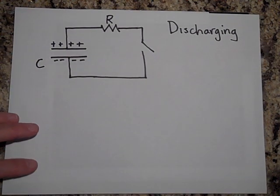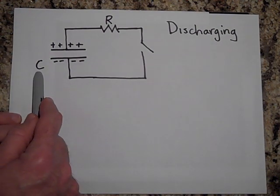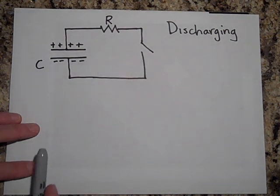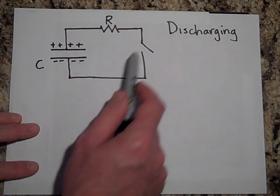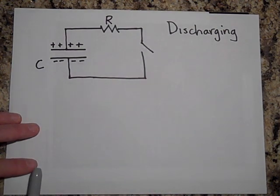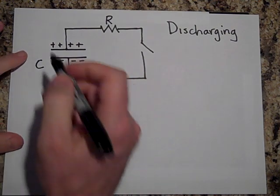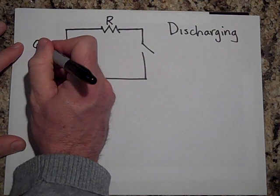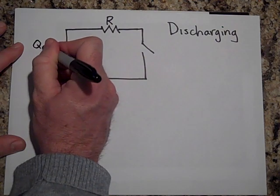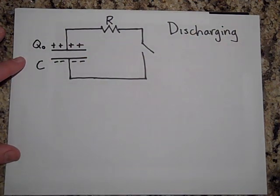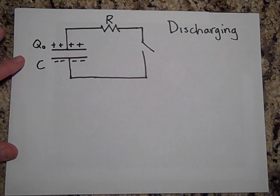Here is a capacitor C. We're going to have it in series with a resistor R and a switch. Our capacitor is going to be charged up — let's say an initial charge of Q0. And this is about discharging a capacitor.